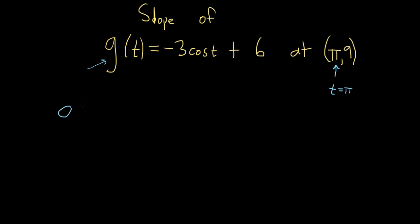Okay, so g prime of t is equal to, so the negative 3 hangs out, and then we just take the derivative of cosine. So the derivative of cosine is negative sine, so we have negative sine t, and then the derivative of 6 is 0, so just taking the derivative.